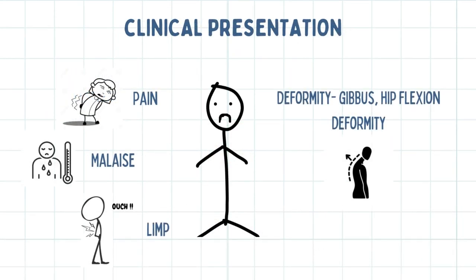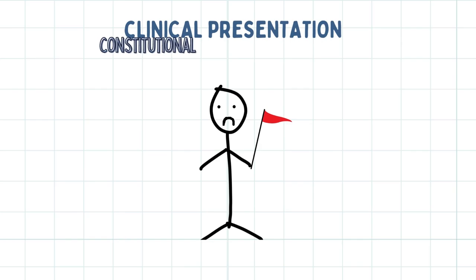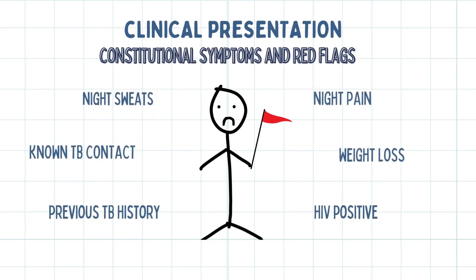The clinical presentation depends on the site of TB infection in the skeletal system. Common presentations include pain, which is insidious and may only present at a later stage when spinal destruction has already occurred, general malaise, lymphadenopathy, and deformities such as gibbus and hip flexion deformities. Red flags include night pain, constitutional symptoms like weight loss and night sweats, known TB contact, and history of previous TB infection. Always ask the patient about their HIV status, as this increases their risk of TB infection.